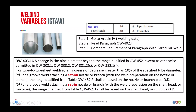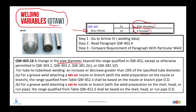Hello everyone! Today we will talk about the second variable for the GTAW process, which is the P-metal method. This variable is divided into two sub-variables: pipe diameter and P-number. So we have two paragraphs: QW-403.16 for the pipe diameter and QW-403.18 for the P-number.